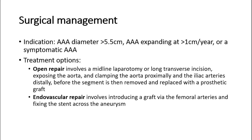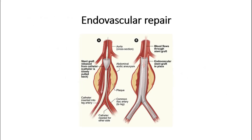The main treatment options are open repair or endovascular repair. Open repair involves a midline laparotomy or long transverse incision, exposing the aorta, and clamping the aorta proximally and the iliac arteries distally, before the segment is removed and replaced with a prosthetic graft. Endovascular repair involves introducing a graft via the femoral arteries and fixing the stent across the aneurysm. This picture shows endovascular repair of the aneurysm.